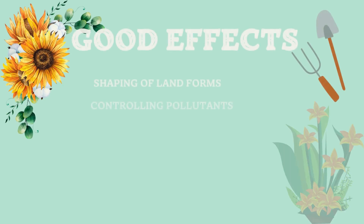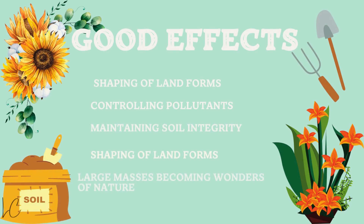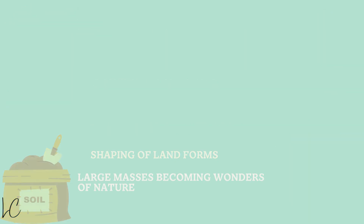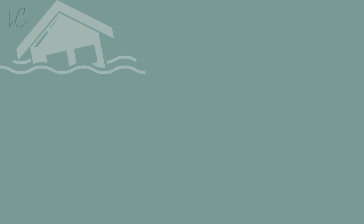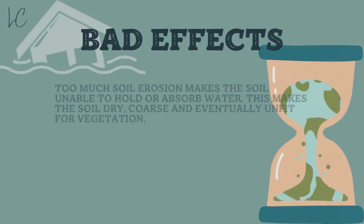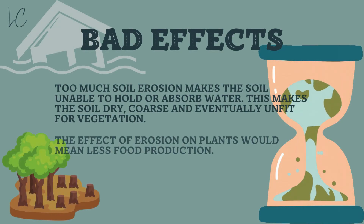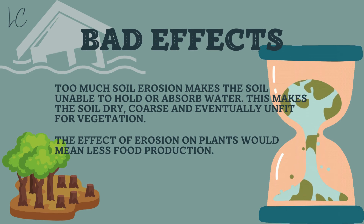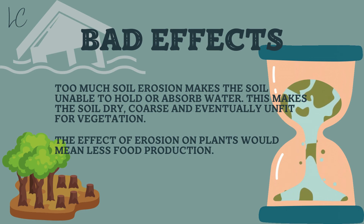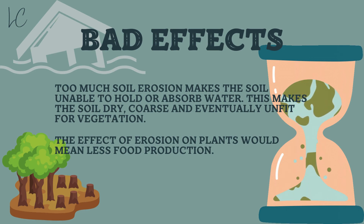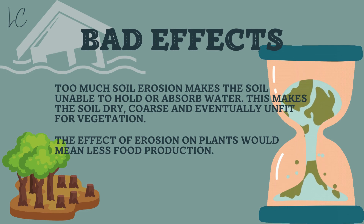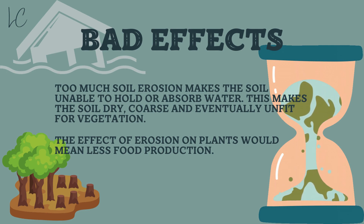There are good and bad effects of soil erosion. A few of the good effects are shaping of landforms, controlling pollutants, maintaining soil integrity, and large masses becoming wonders of nature. A few of the bad effects are that too much soil erosion makes the soil unable to hold or absorb water. This makes the soil dry and coarse and eventually unfit for vegetation. The effect of erosion on plants would mean less food production.